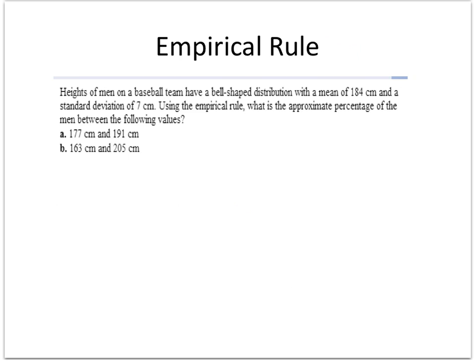It says heights of men on a baseball team have a bell-shaped distribution, that means it looks like that, with a mean of 184 centimeters and a standard deviation of 7 centimeters. Use the empirical rule: what is the approximate percentage of the men between these following values?